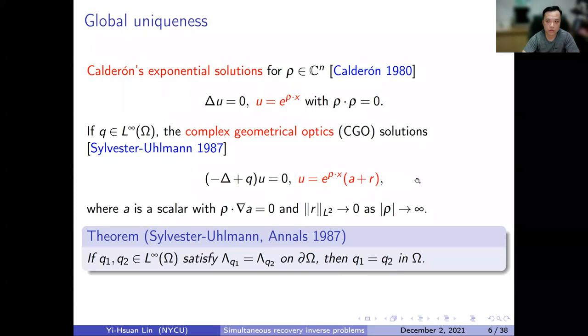Everyone is familiar with this, so I give just a very quick review. This is the unique determination problem for the linear Schrödinger equation.